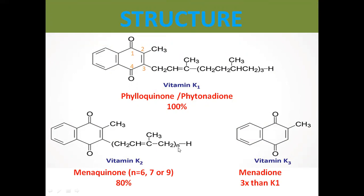Vitamin K2 can have a repeating unit value of n = 6, 7, or 9, meaning the isoprene unit in the side chain at carbon 3 is repeated 6, 7, or 9 times through the structure. The chemical name of Vitamin K2 is menaquinone.